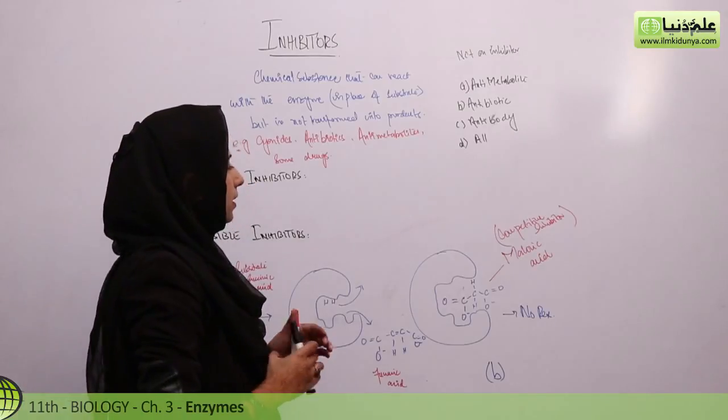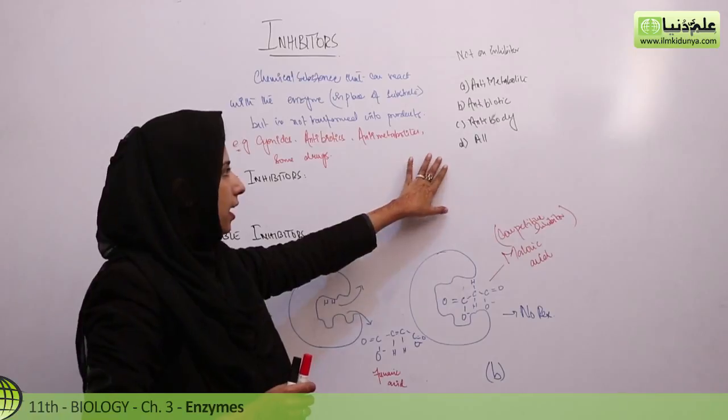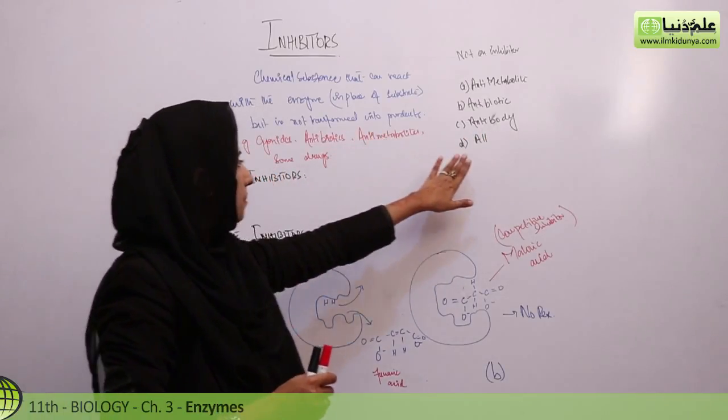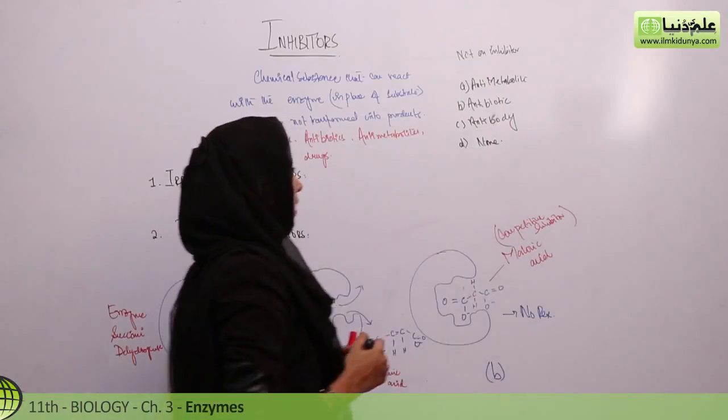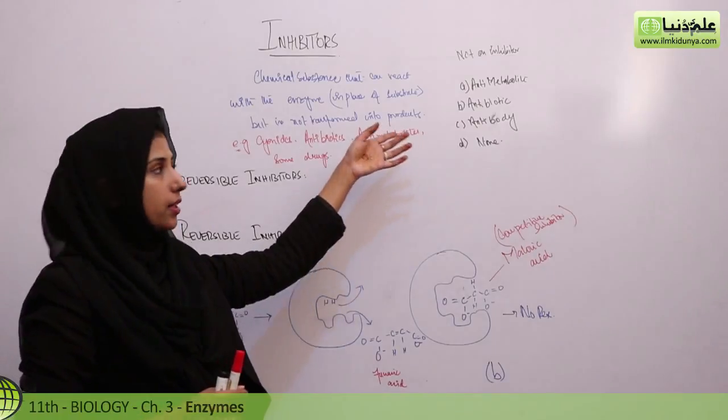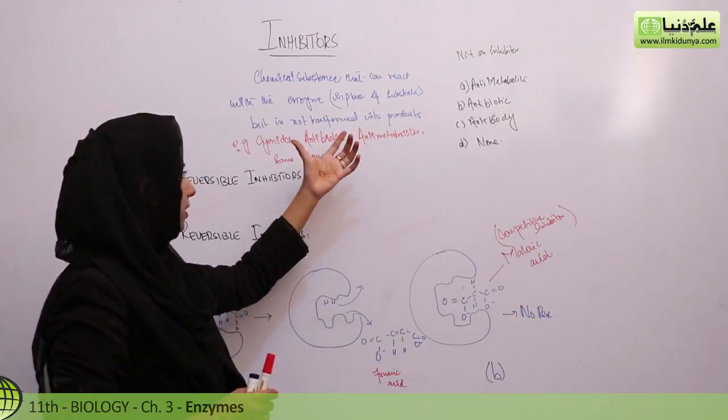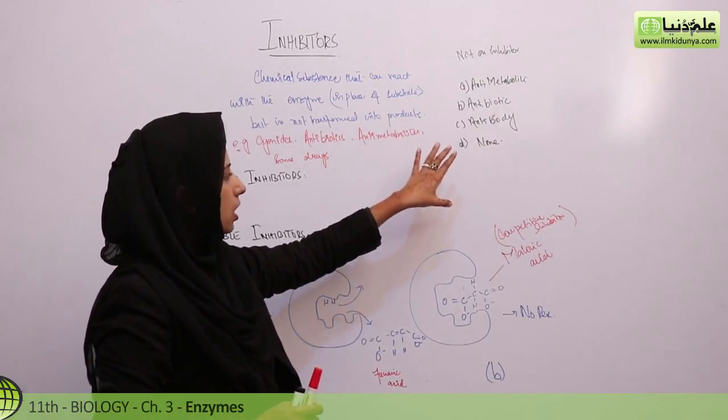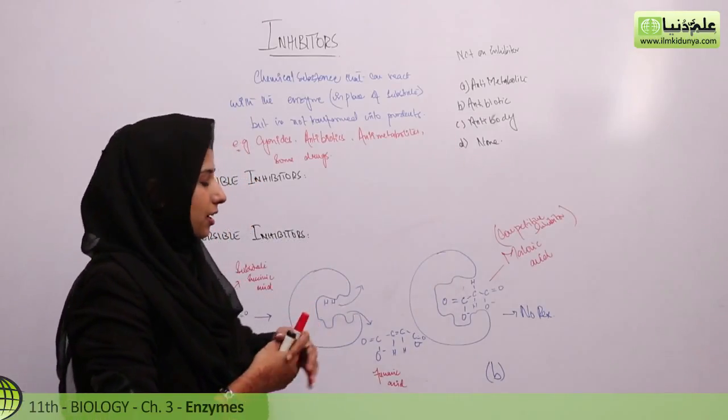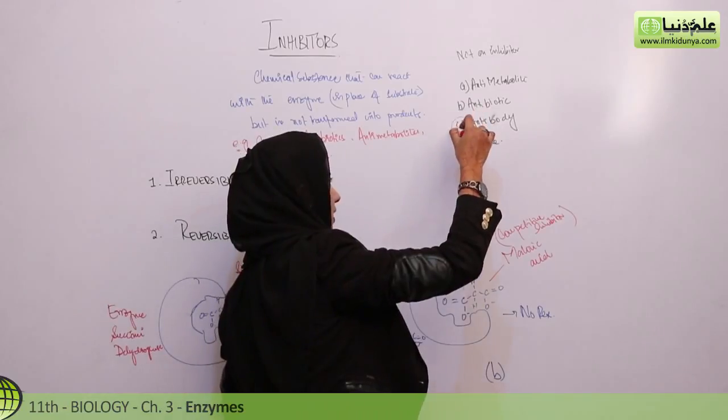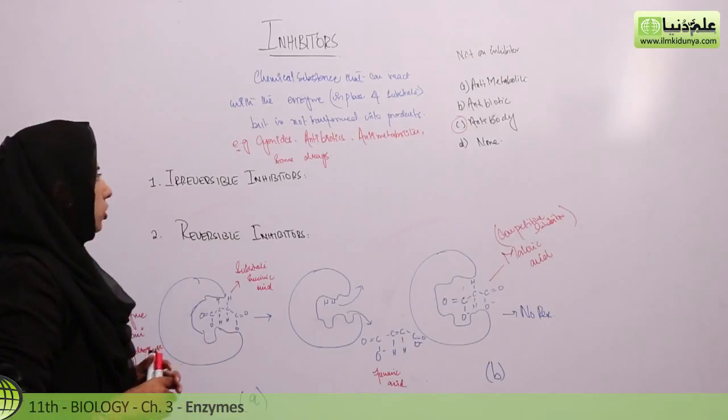Anti-metabolites and antibiotics are both inhibitors. Antibodies are not enzyme inhibitors - students often mix up antibiotics and antibodies. So if the option is 'none', you should choose option C, antibody, as it is not an enzyme inhibitor.